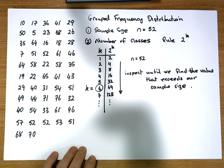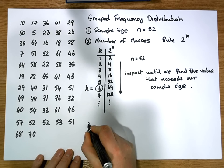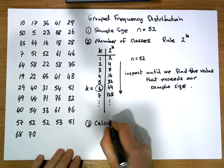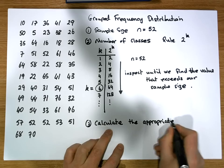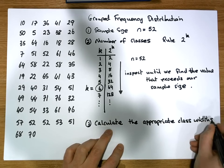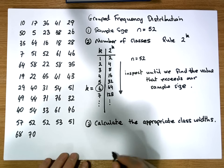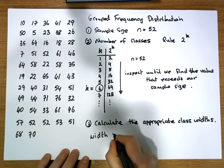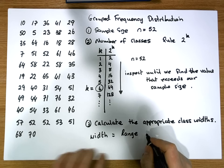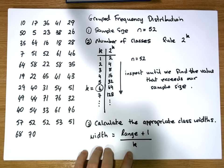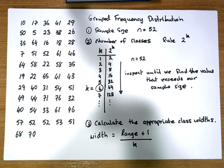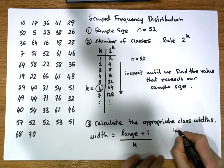Step three, which is really important, is to calculate the appropriate class width. The rule says the width of a class equals the range of the data set — with a small kicker of plus one — divided by the number of classes. The range is simply the difference between the largest and smallest observations.